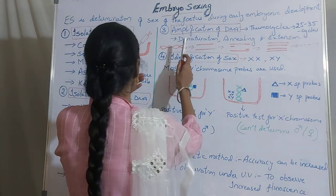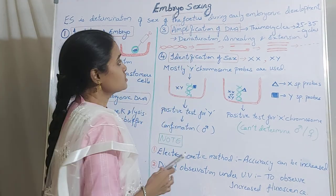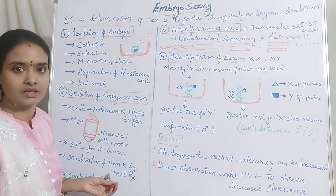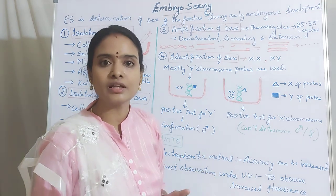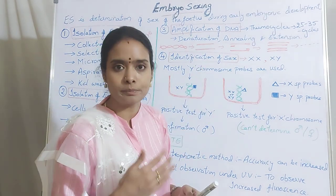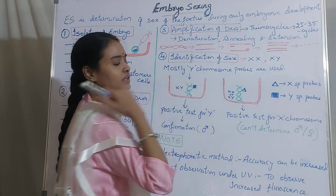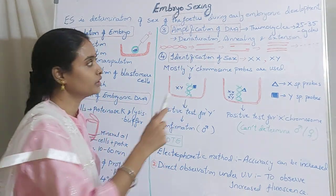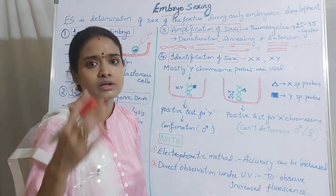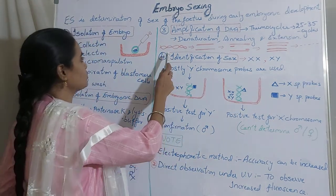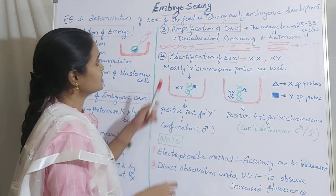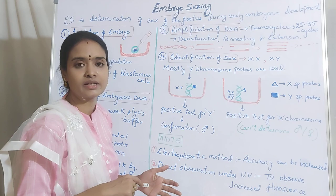Coming to the third step, amplification of the DNA. You have isolated the embryo, then from that taken the cells, and from the cells isolated the DNA. After isolation, that small amount of DNA may not be sufficient, so you have to increase the number of copies — that is amplification of the DNA. You are going to do that in a thermocycler running for 25 to 35 cycles so that you get more copies of that particular DNA. This process is also discussed already in polymerase chain reaction — PCR technique.